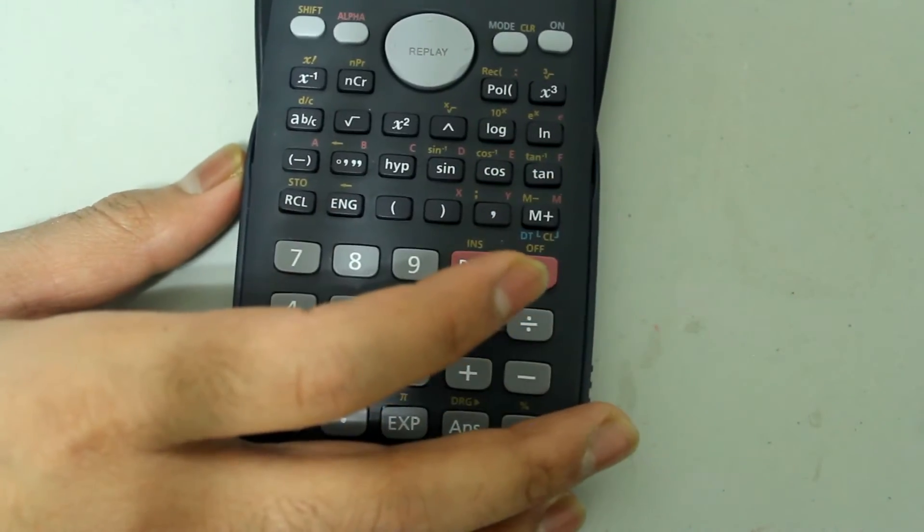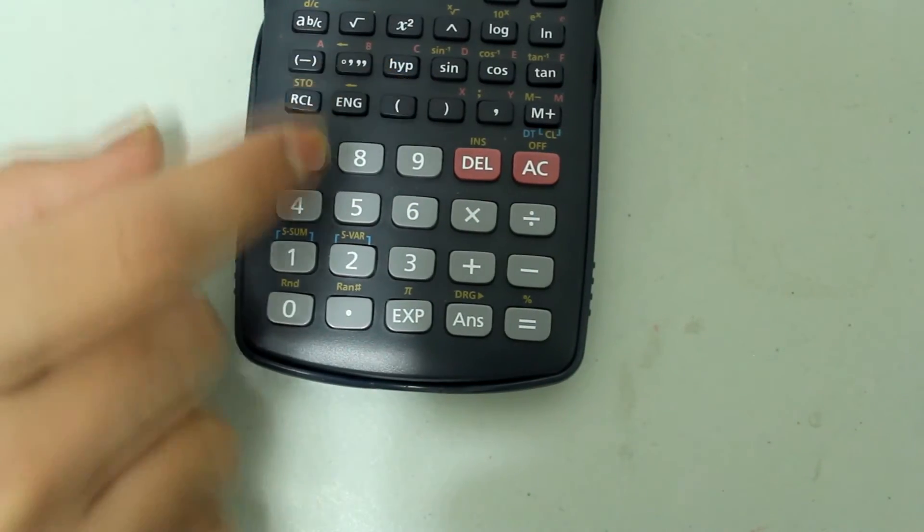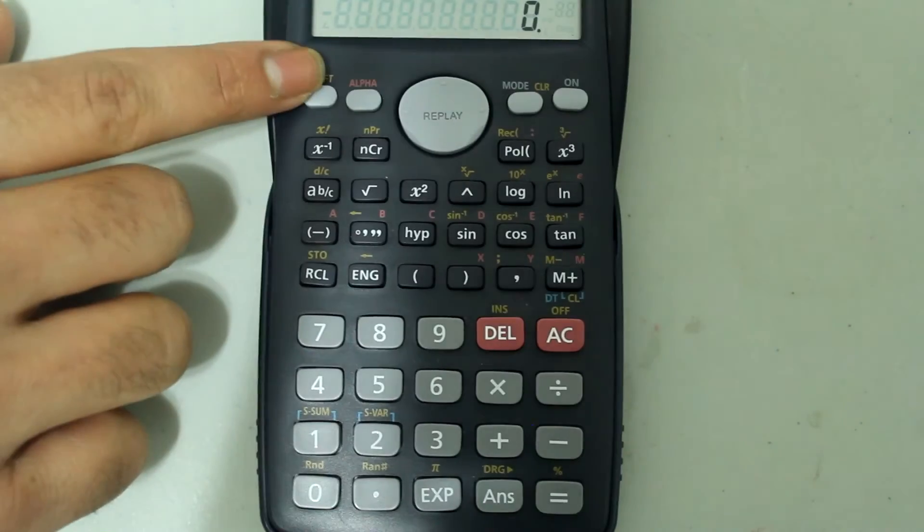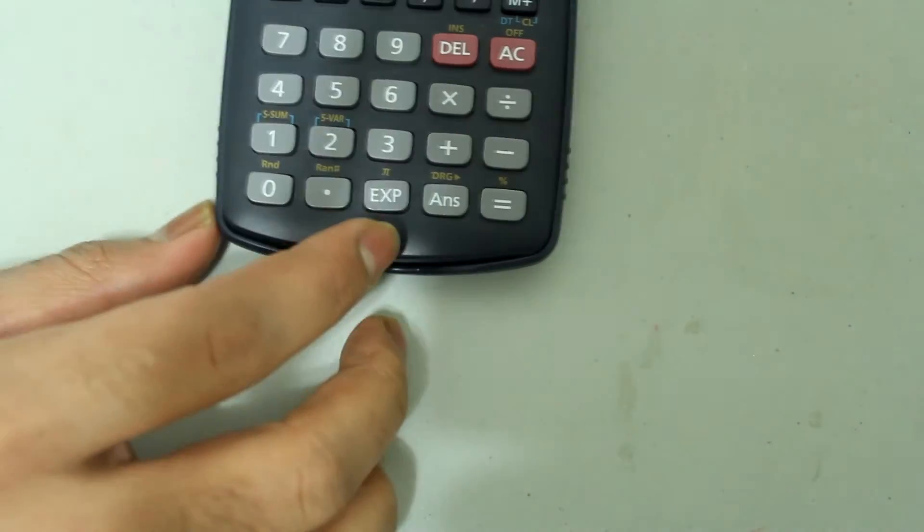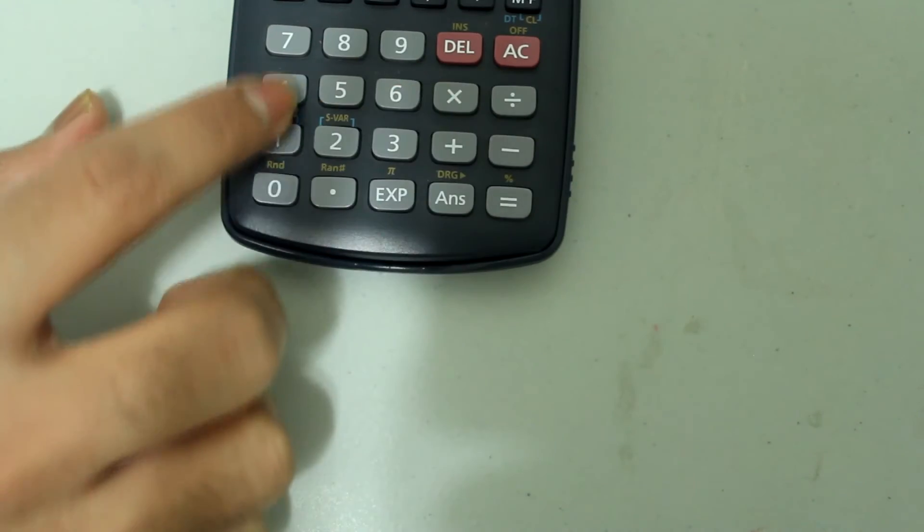Let's type in pi over 4, but this time we are going to need parentheses, and then press shift, the exp button to select pi, then divide 4, and then close the parentheses.